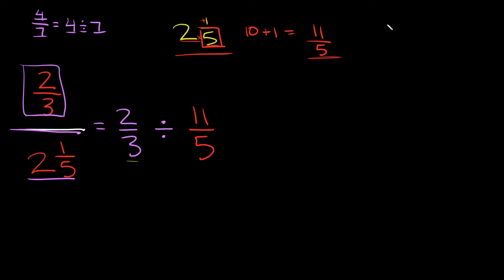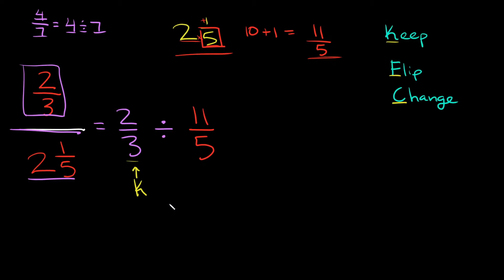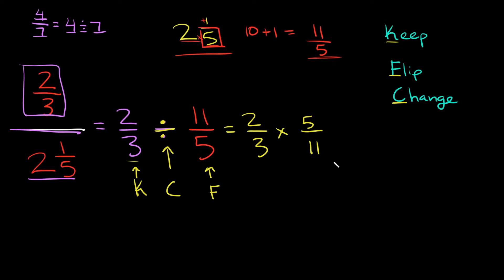So I'm going to replace the mixed number with the improper fraction eleven over five. Now there's a delicious-sounding acronym you can use: KFC, which stands for Keep, Flip, Change. Keep the first fraction as it is — two over three stays as two over three. Then flip the second fraction: eleven over five becomes five over eleven. And lastly, change the sign from division to multiplication. Now we're just multiplying fractions straight across: two times five is ten, over three times eleven, which is thirty-three.